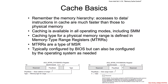We need to refresh you a little bit on some stuff about caching and how it's managed on Intel systems. Caching is available in all operating system modes, including System Management Mode. Typically, what are used to configure caching are some MSRs called Memory Type Range Registers, MTRRs.